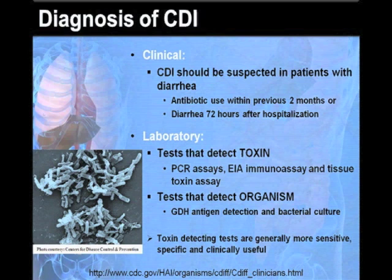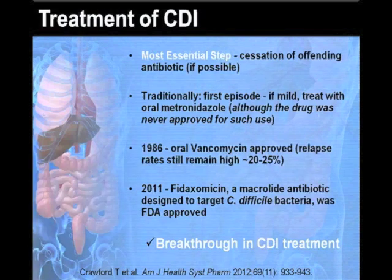In general, toxin-detecting tests are more sensitive, specific, and are more useful clinically than tests that aim to detect the organism. Perhaps the most important step in the treatment of CDI is cessation of the offending antibiotic if possible. Traditionally, the first episode of CDI, if mild, is treated with oral metronidazole, although this drug was never approved for such use.